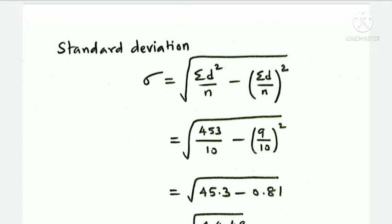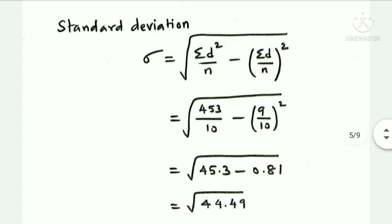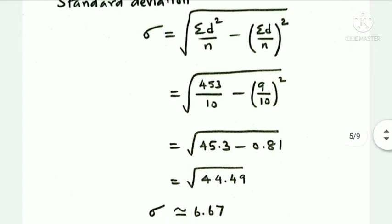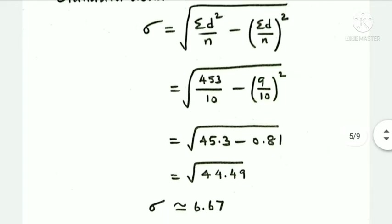9 by 10 is 0.9, and 0.9 squared is 0.81. So we get root of 45.3 minus 0.81, which is root of 44.49. The standard deviation sigma answer is approximately 6.67.